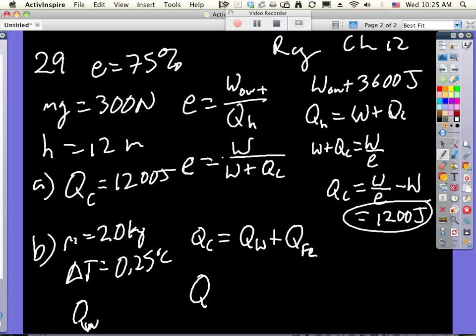QW is going to be equal to QC minus MC delta T. I don't know why I made that C little midget thing like that. And that's going to be mass of the iron, specific heat capacity of iron, times the delta T of iron.